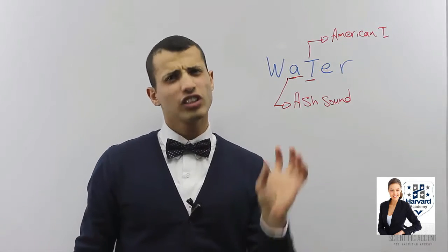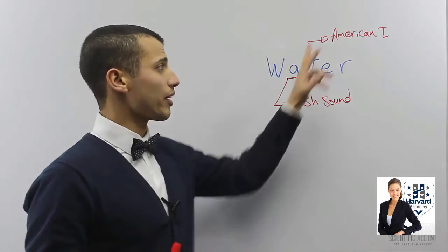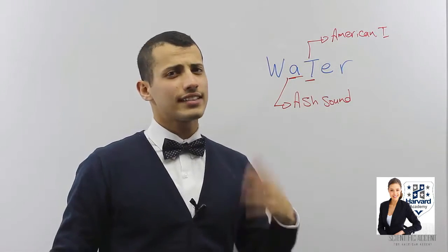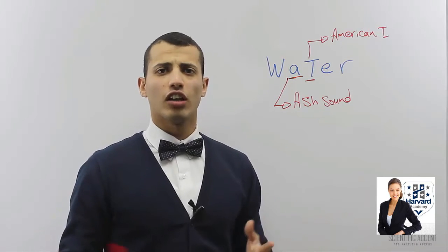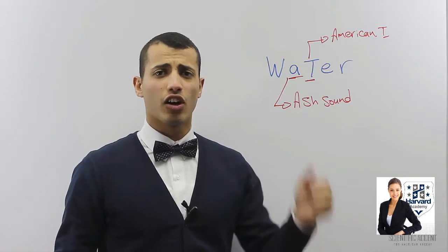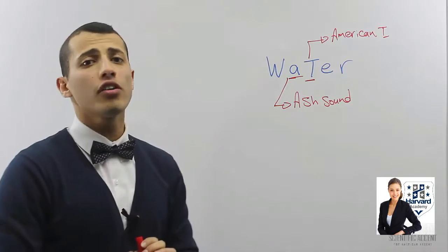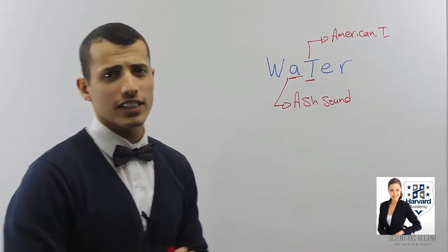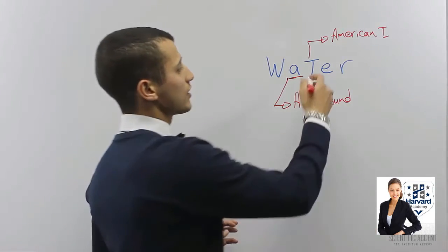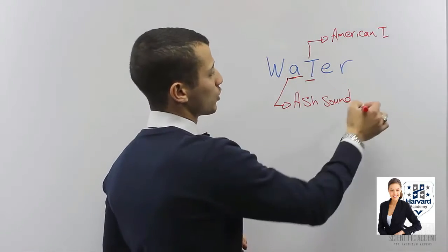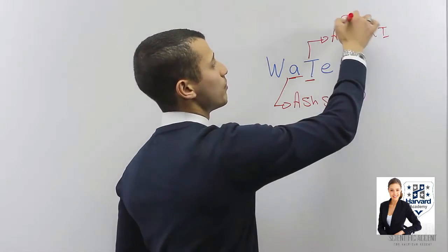Very light T. The rule for the American T is: whenever you see a T between two vowels, it becomes the American T — 'da.' The vowel letters are A, E, I, O, and U. Any other letter is called a consonant. So this is rule number two: the American T.